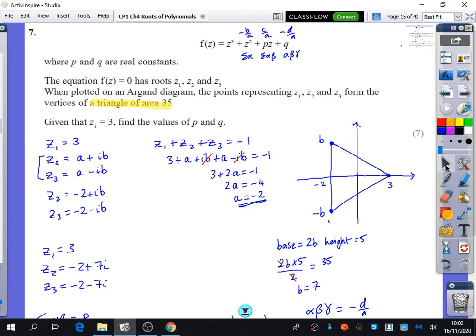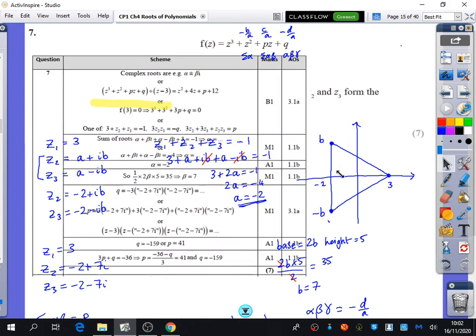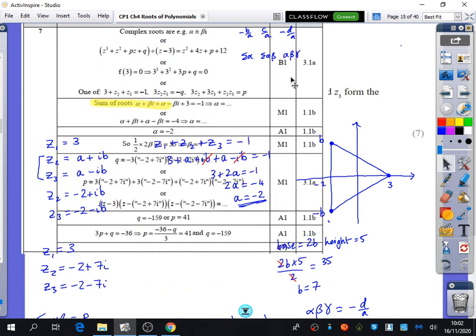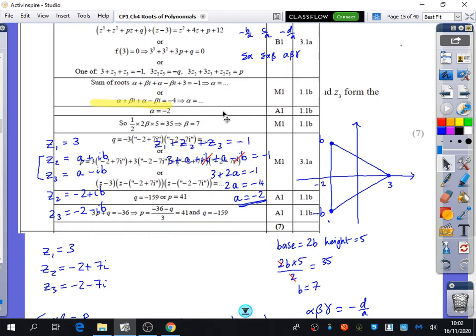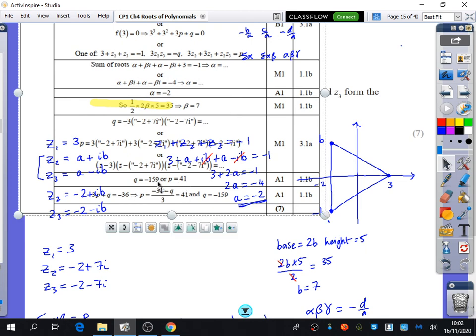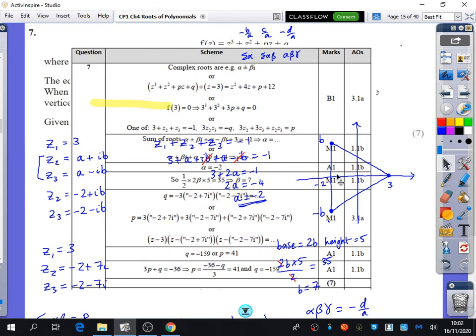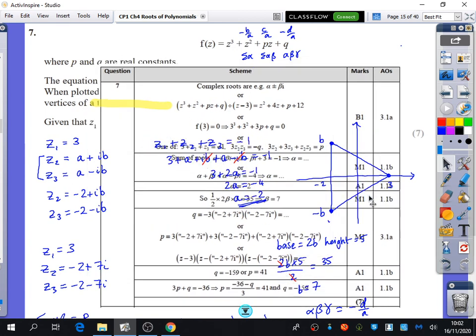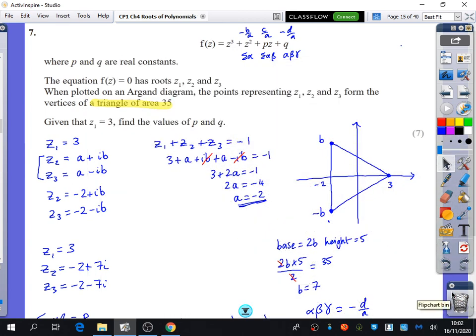And then I've just got the mark scheme here if we want to have a quick look at the mark scheme. It's a bit annoying with all that stuff behind it. But yeah, you can see we got that the alpha part was minus 2. As long as we've got the p and q were the right answers, we know we did this all right.